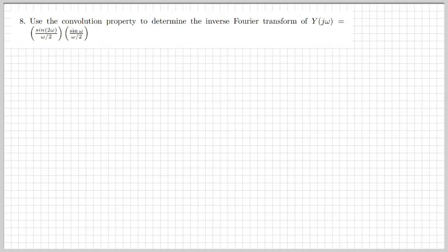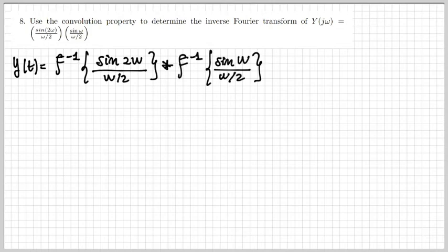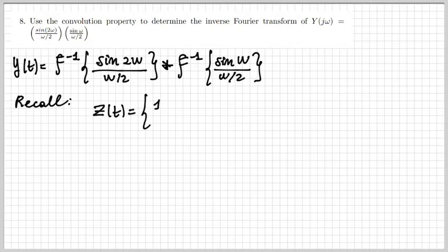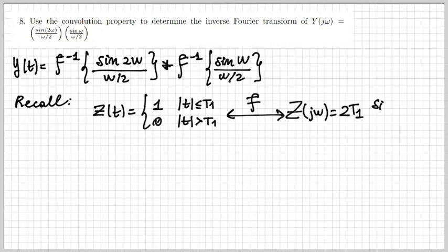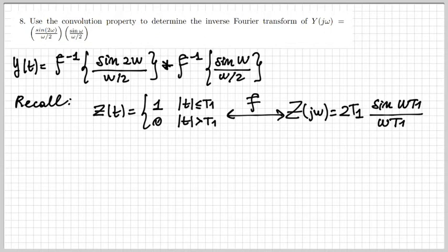Our next exercise is number eight. Here we should use the convolution property to determine some inverse Fourier transforms. We have Y(jω) defined as the product of two functions. A product in the frequency domain corresponds to convolution in the time domain, so I can calculate y(t) as the convolution of the two inverse Fourier transforms of those two terms. I recall that a rectangular pulse signal has a sinc-shaped Fourier transform.